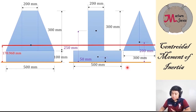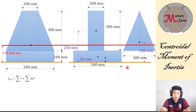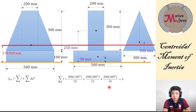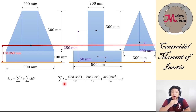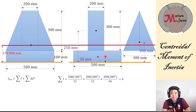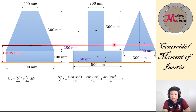Next, use the transfer formula: summation of I-bar plus summation of AD². The summation of I-bar is the sum of the centroidal moment of inertia of each figure about the axis parallel to the neutral axis. For a rectangle, the centroidal moment of inertia is BD³/12, where B is the dimension parallel to the axis of inertia. For rectangle 1, B is 500; for rectangle 2, B is 200 and D is 300. For a triangle, we have BD³/36. Calculate this and store it to letter A.